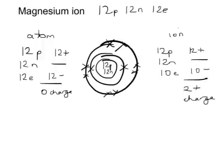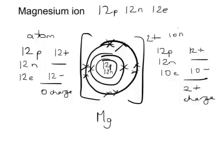We would draw it with a square bracket around the outside and a 2 plus charge. It would be a magnesium 2 plus ion.